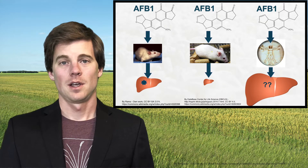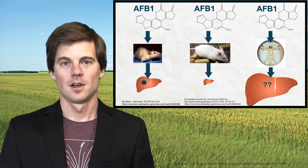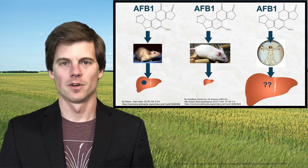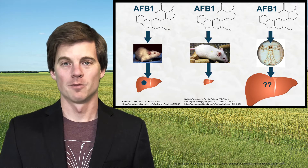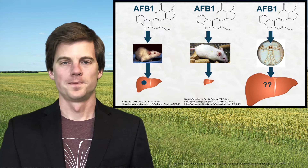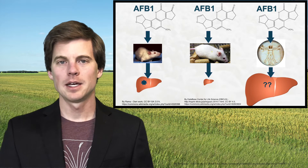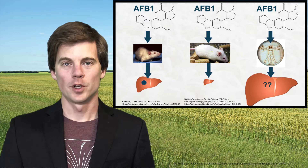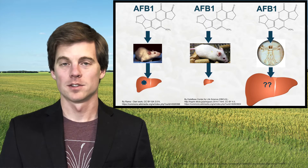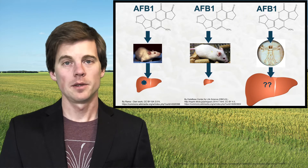With humans, it's a big unknown. Humans are different, with lots of species-specific differences. Most lab rats and mice are very similar to each other, coming from the same gene pool, but humans are a very diverse species. What happens in the human liver? We don't really know. We can extrapolate from rodents, but it seems to be kind of in between the rat and the mouse — it's not causing every human ever exposed to aflatoxins to develop liver cancer, but it does seem to have an effect.